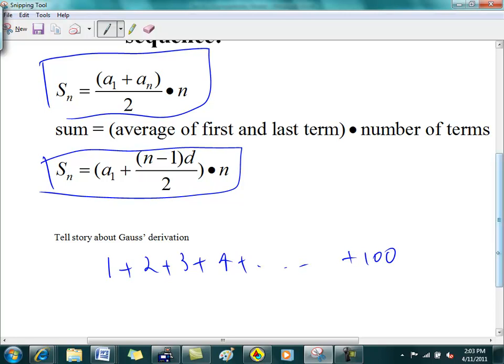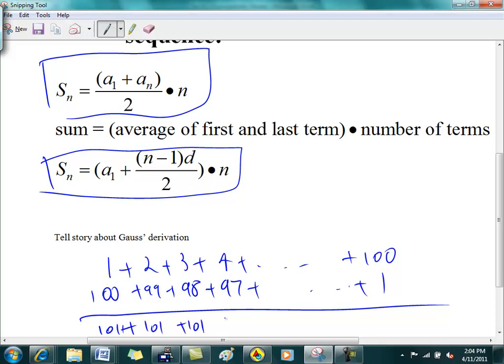So his tutor gave him this problem and said, hey, can you do this for me? So being the genius that he was, he said, yeah, you just do this. You add it up and you get 101. How many 101s do you get, teacher? 100.